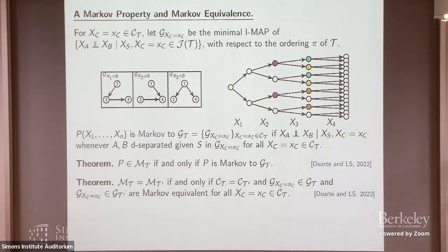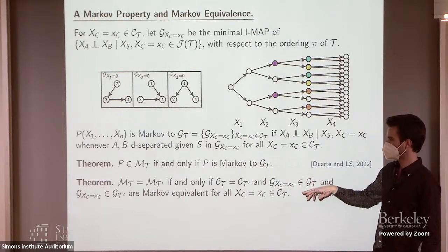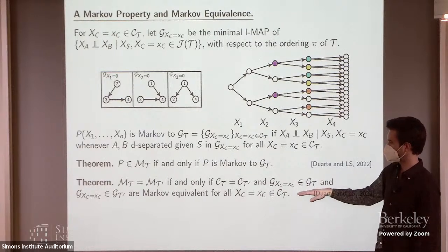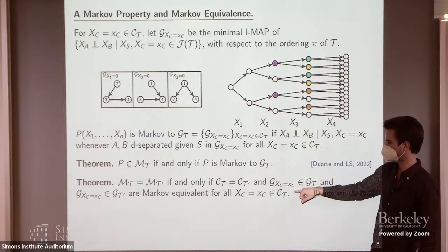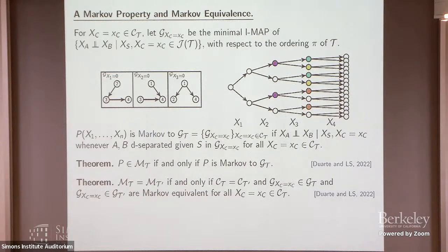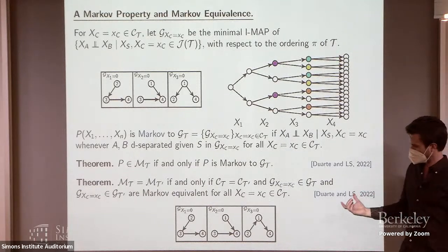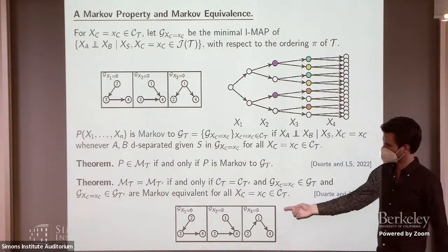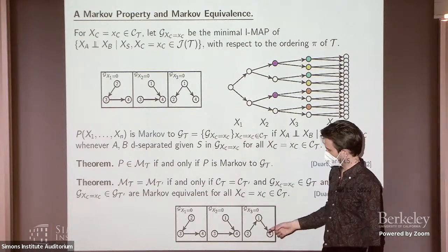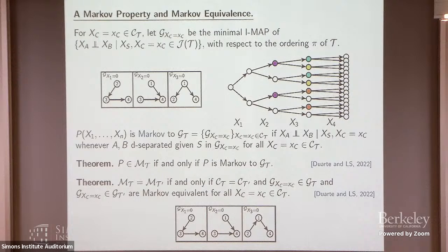It's not complete — we can't read off every CSI relation encoded by the model from these context graphs — but we can certainly read off more of them, and enough to get a structural characterization similar to the Verma-Pearl type characterization of DAG model equivalence. In particular, two stage tree models are equal if and only if they have the same set of minimal contexts, and if we fix one of those minimal contexts, their two context graphs have to be Markov equivalent — so we can reduce it to looking at skeletons and V-structures. For instance, we can generate the CS tree that has a given sequence of context graphs: if the first two contexts are identical and the last one has a reversed arrow but no new V-structures introduced, the two CS trees represent the same model.